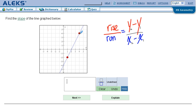Our rise here is simply the vertical motion between the two points, and our run is the horizontal motion. So this would be our rise. This would be our run.